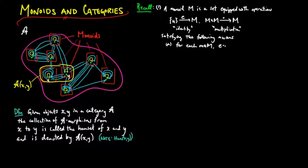And these operations satisfy the following axioms. A, for each element M in M, E times M is equal to M and M times E is equal to M. And B, for each triple of elements M1, M2, and M3 in M, M1 times the quantity M2 times M3 is equal to the quantity M1 times M2 times M3. A is called the identity law and B is called the associativity law.